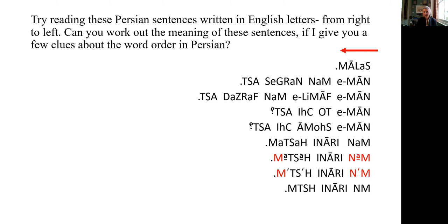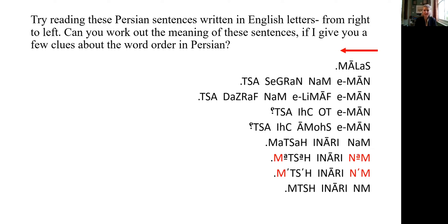First, some basic information about Persian. Persian has 32 letters of the alphabet. In terms of the characteristics of the language, there is no gender in Persian — there is no he or she, no feminine or masculine. This makes it much easier to learn compared to languages where you have to work out if a noun is feminine or masculine. But it does make the translations of love poetry very interesting — who is the beloved? Female or male?